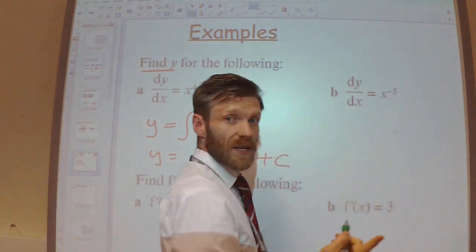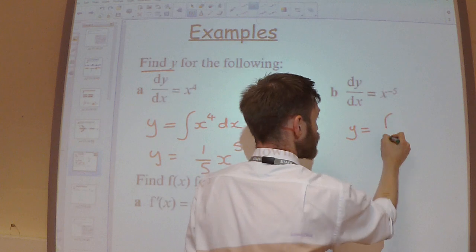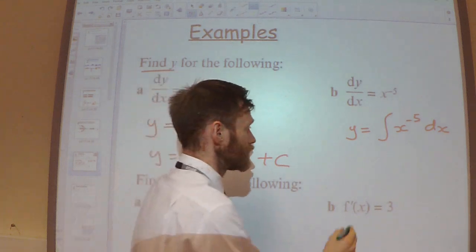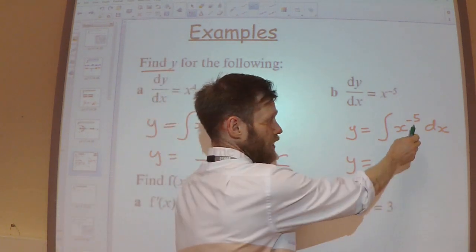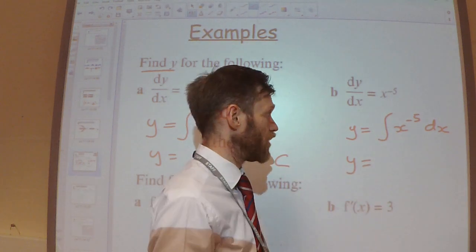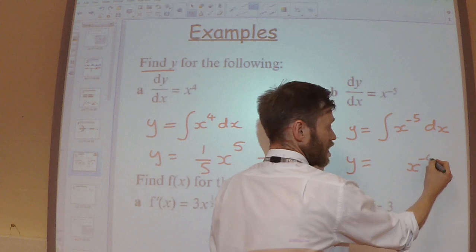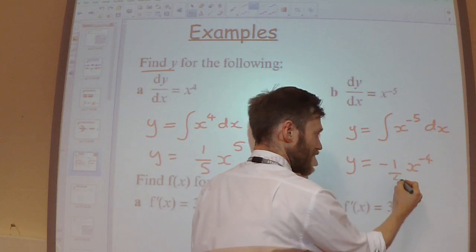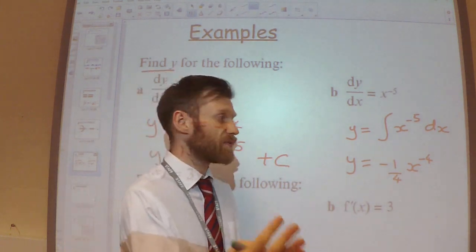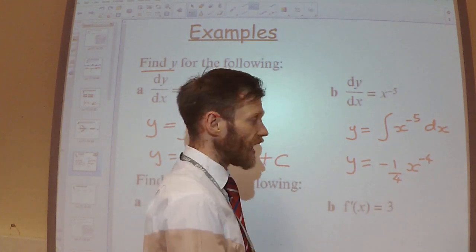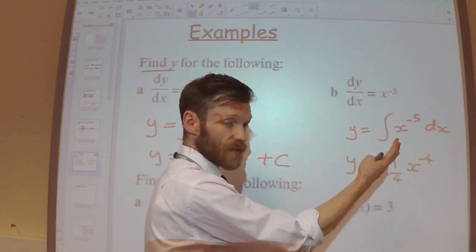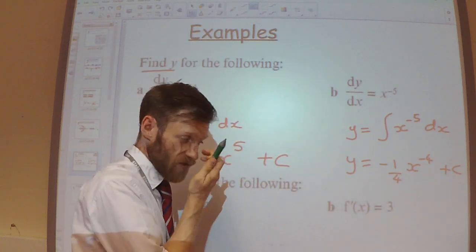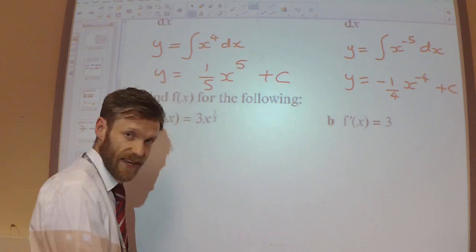Next example: we've got x to the power of −5. So y equals the integral of x^(−5) with respect to x. Raise the power by 1: −5 + 1 = −4. Divide by that new power: dividing by −4 gives me a minus quarter at the front, because dividing by −4 is the same as multiplying by −¼. Plus my constant of integration. It's very important you don't forget the constant of integration — you will lose marks in the exam if you don't include it.